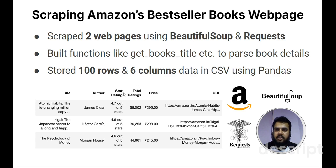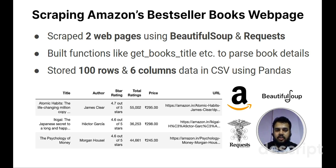The last project is scraping Amazon's bestseller books webpage. In this project, I scraped two webpages using BeautifulSoup and Requests libraries of Python. I built many functions such as get_book_title, get_author_name, etc. to parse book details. I stored all the information in the form of 100 rows and 6 columns in a CSV file using Pandas.